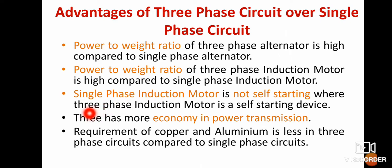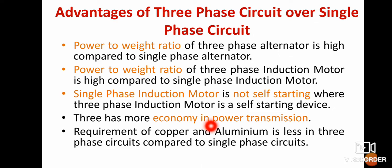Moving on to the fourth point: three-phase has more economy in case of power transmission. We use three-phase power transmission, not single-phase power transmission. Moving on to the fifth point: the requirement of copper and aluminum is less in case of three-phase circuit compared to single-phase circuit. Suppose I have to transmit the same amount of power from one point to another — comparing single-phase and three-phase systems — the amount of copper or aluminum conductor required differs.